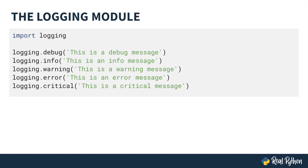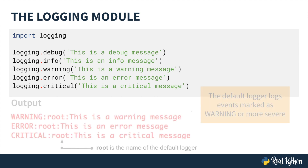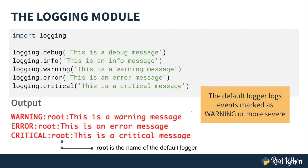The logging module contains a function for each severity level, and they are all used in the exact same way. If we run this program, we'll see that the following output will be written to standard out. As you can see, the default logger is set to a level of warning, meaning that only events marked as warning or more severe will be logged. The default format is the level, followed by the logger name, followed by the message. Root is the name of the default logger.